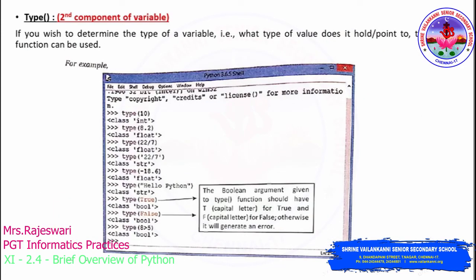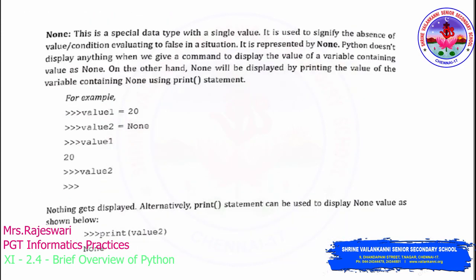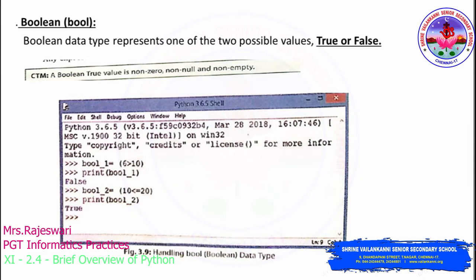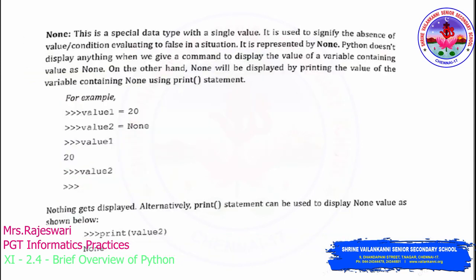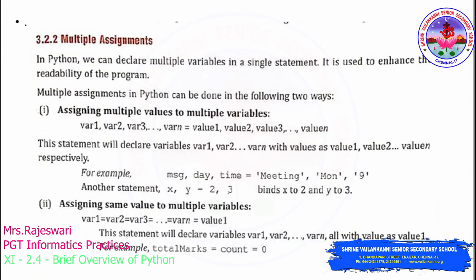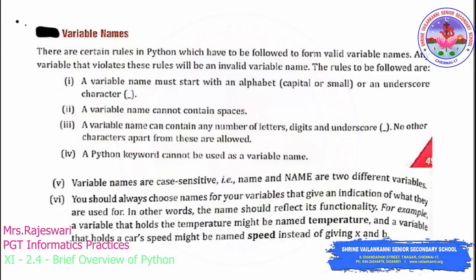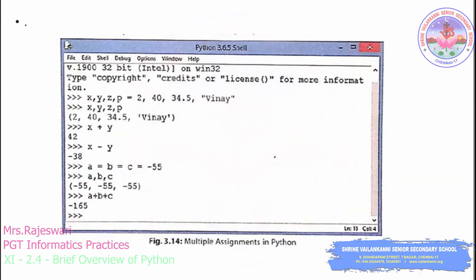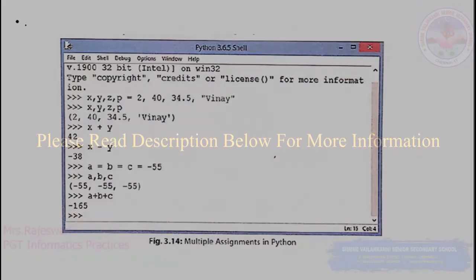So regarding data types — the type component of a variable, None data type, boolean, and dictionary — we have discussed these in today's class. We will discuss the rules for variables in the next class. I hope you understood the class. Thank you.